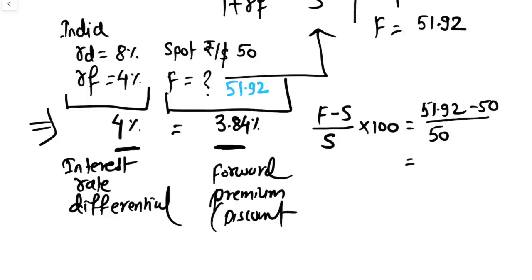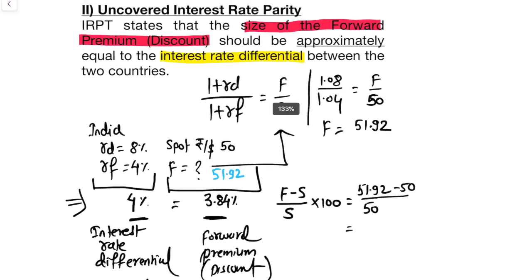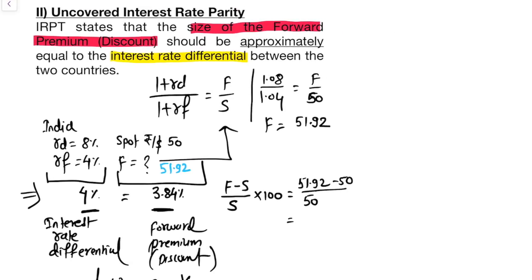If interest rate differential or forward premium are not approximately equal, arbitrage is possible. So this is the entire meaning of Uncovered Interest Rate Parity Theory.